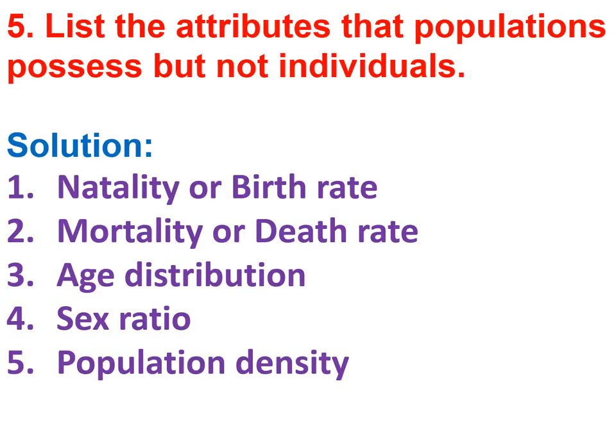NCERT question 5 asks: list the attributes that a population possesses but not individuals. These are: natality or birth rate, mortality or death rate, age distribution, sex ratio, and population density. These are attributes of a population but not of individuals.